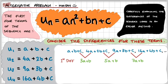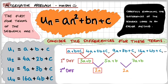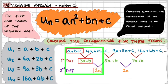Now let's look at the second differences. The second difference between 5a plus b and 3a plus b: 5a minus 3a gives 2a, and b minus b cancels out. Then 7a plus b minus 5a plus b gives 2a again. Now if the second differences are constant, you know that you have a quadratic sequence. What we're going to highlight is 2a, 3a plus b, and a plus b plus c. These three terms are going to be exactly the same no matter what quadratic sequence we're dealing with, because they come from the standard form.